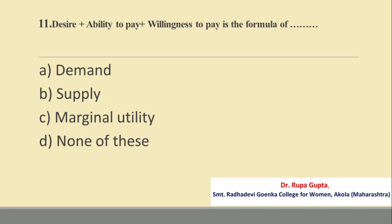Question number 11. Desire plus ability to pay plus willingness to pay is the formula of: A. Demand, B. Supply, C. Marginal utility, D. None of these. The correct answer is A, that is Demand.